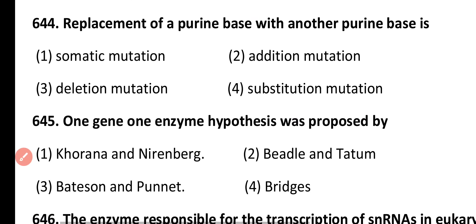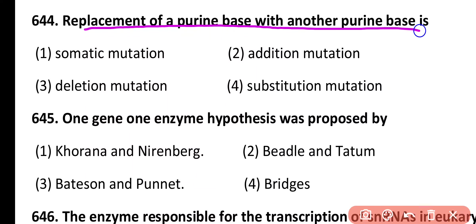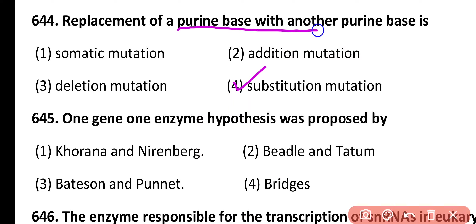Question 644. Replacement of a purine base with another purine base is known as: somatic mutation, addition mutation, deletion mutation, substitution mutation. Correct answer is option 4. Substitution mutation is when a purine base is replaced with another purine base.